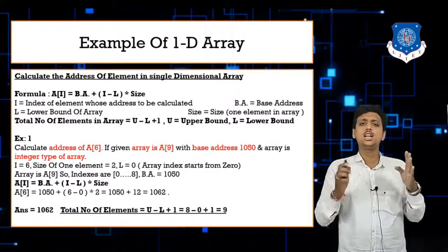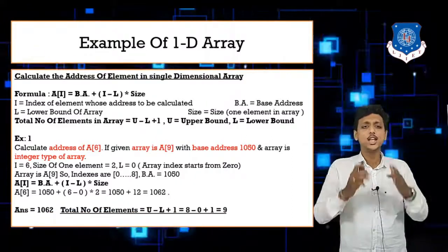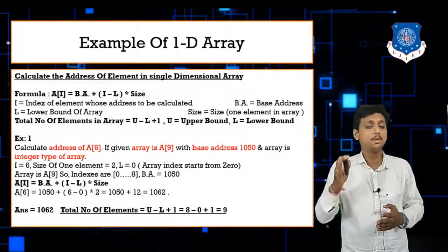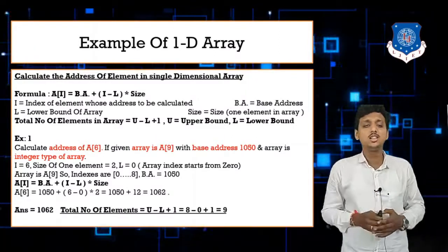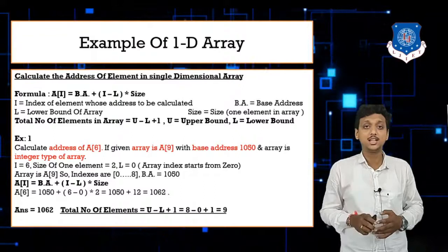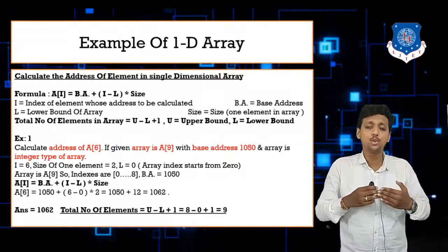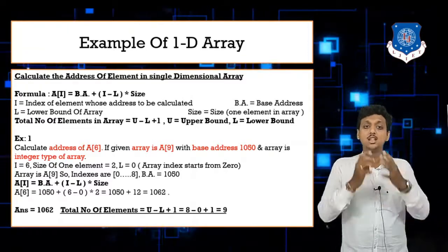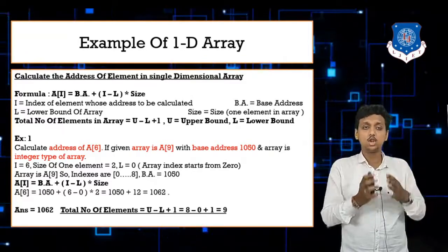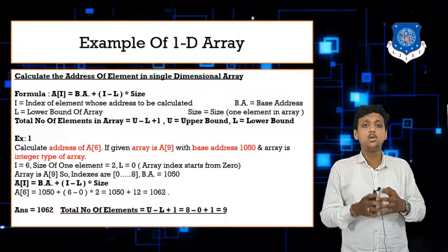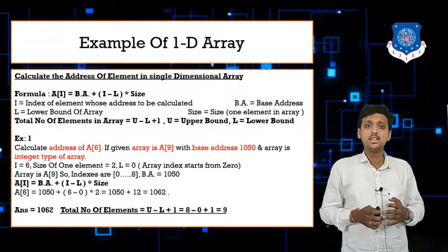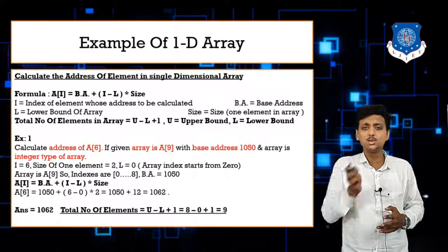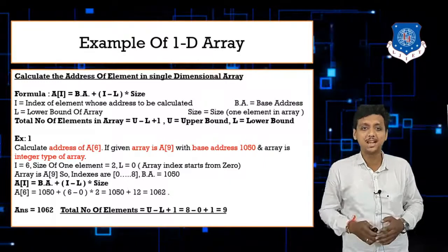To find the total number of elements using the formula U − L + 1: upper bound is 8, lower bound is 0, so 8 − 0 + 1 = 9 elements. This confirms there are 9 elements in the array.